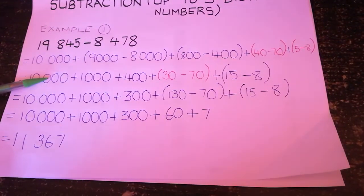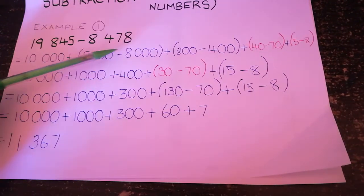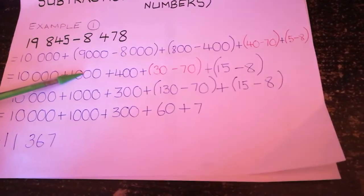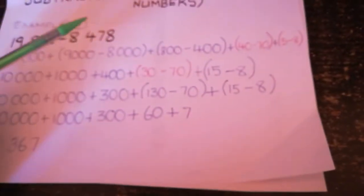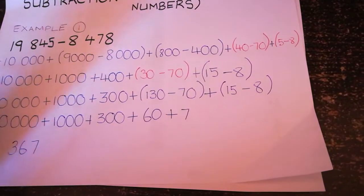Here we are just going to solve what we can. 10,000 plus 9,000 minus 8,000 is 1,000. 800 minus 400 is 400. 30 minus 70, we still cannot minus.